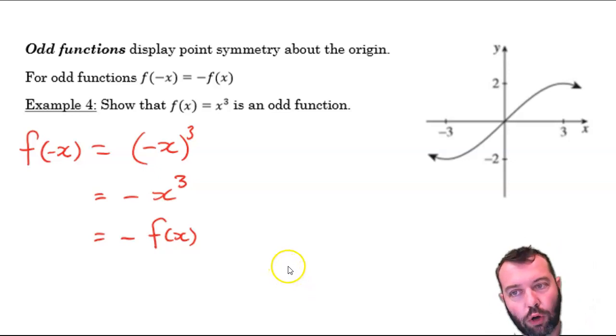That's it. Odd and even functions, we're done. Odd and even functions. What do they mean? Even functions display line symmetry about the y-axis. Odd functions display point symmetry about the origin.